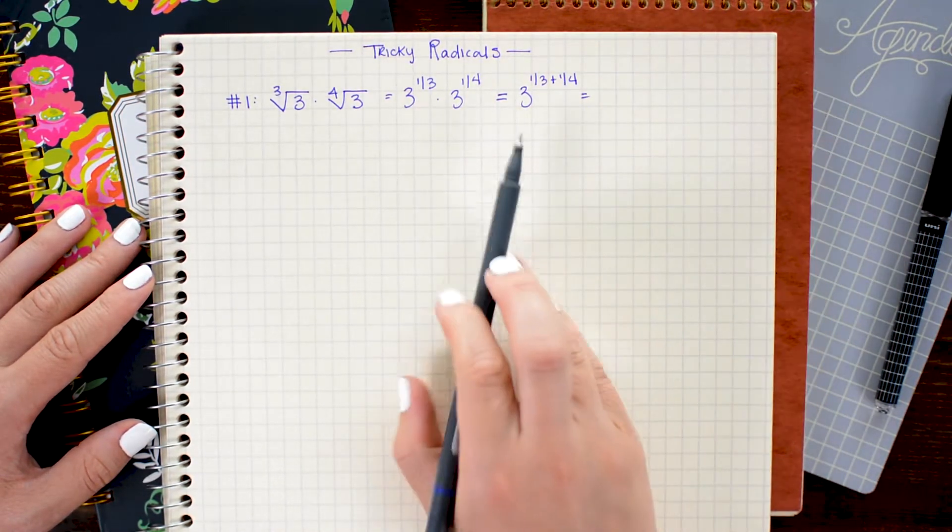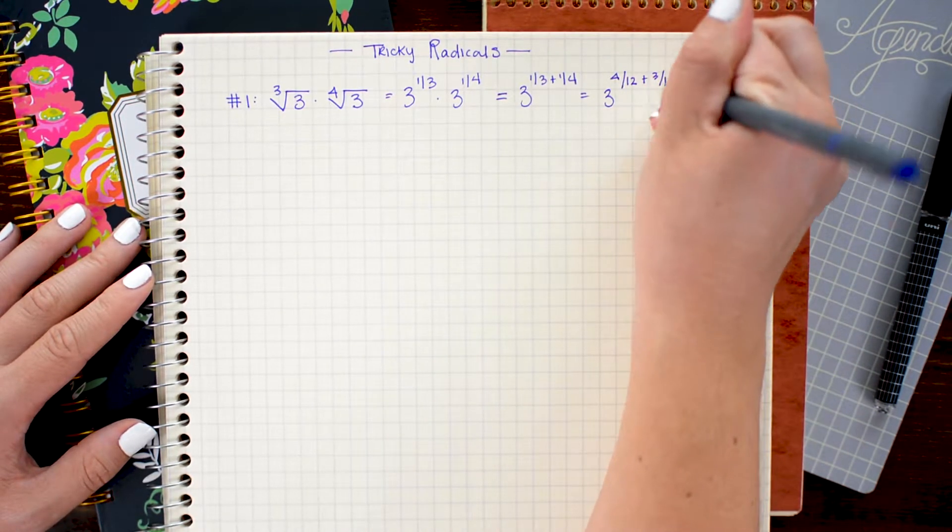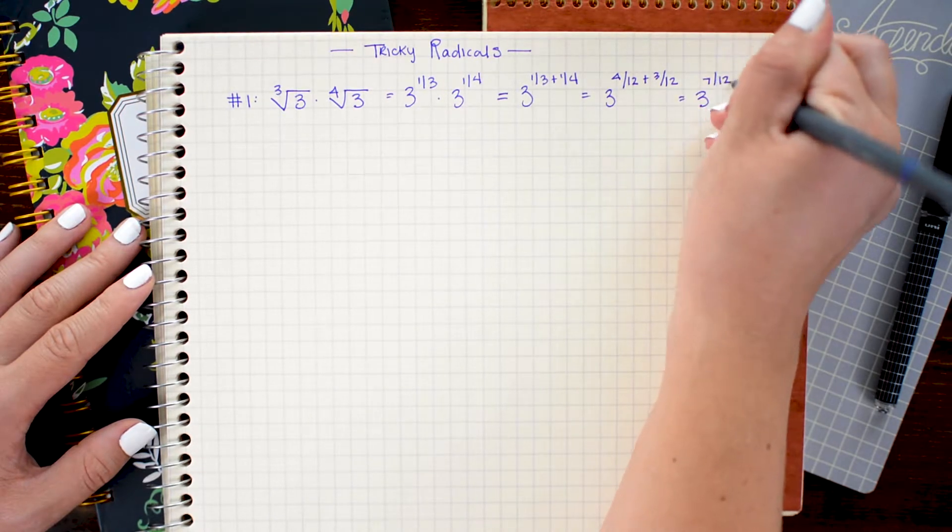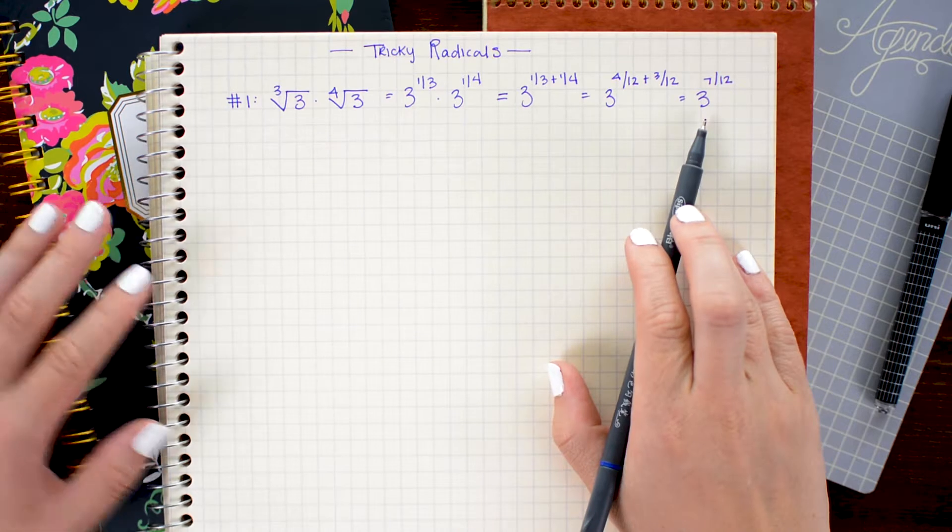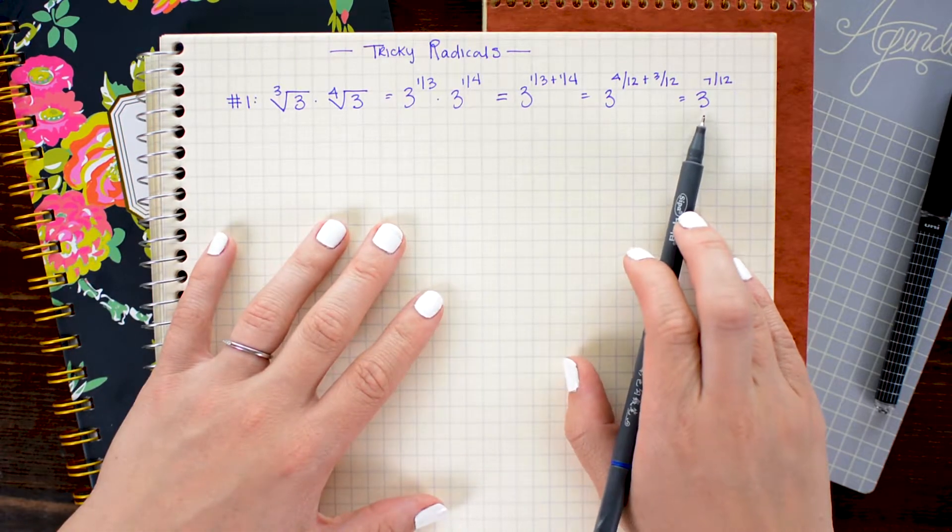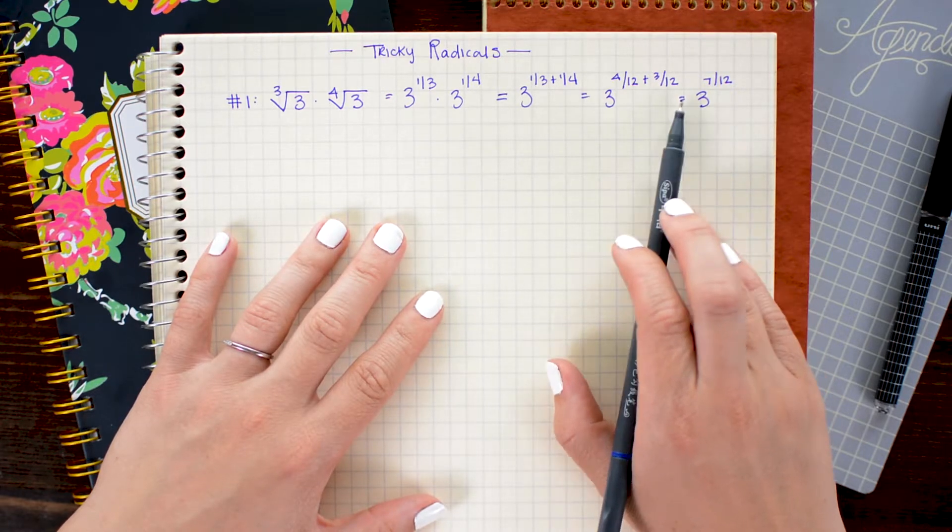I'll go ahead and make a common denominator of 12 and add those together. Lastly we can go ahead and rewrite this back into radical notation. I'll go ahead and get rid of the 12 here and replace it with a 12th root.